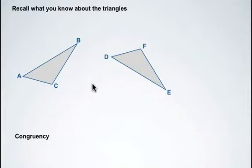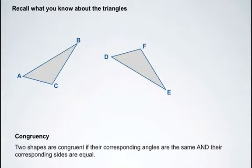We're going to say that triangles or shapes are congruent when their corresponding angles are the same and their corresponding sides are equal.